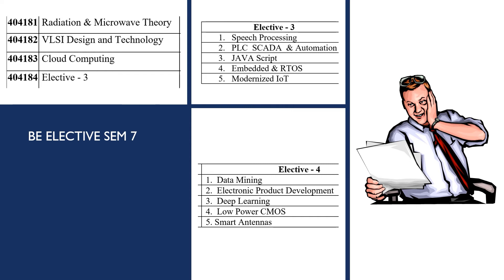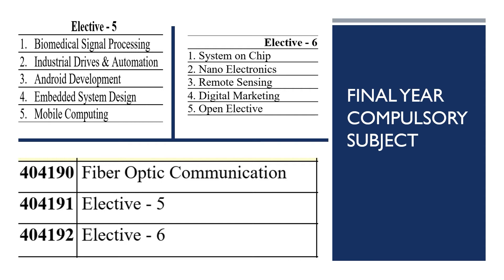Since you already have Cloud Computing as a compulsory subject, if you already know networking fundamentals then Cloud Computing becomes an easier task. For Elective Three, you can go for Modernized IoT, because in sixth generation networks, IoT plays a major role in developing networking concepts and connecting IoT with networks. For Elective Four, the options are Data Mining, Electronic Product Development, Deep Learning, Low Power CMOS, and Smart Antenna.